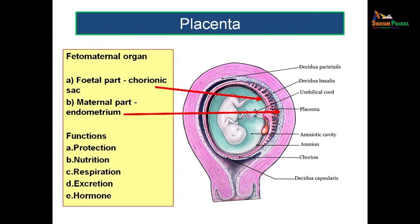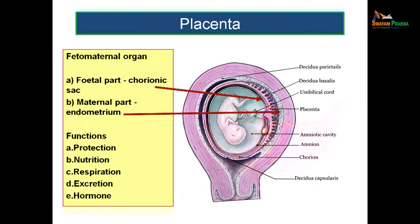What are the functions of the placenta? Placenta is essential for the protection of the fetus; it acts as a source of nutrition, helps in respiration, helps in excretion of waste products, and also secretes some important hormones. Let us now see the structure of the placenta.